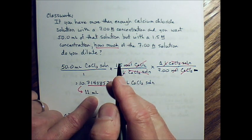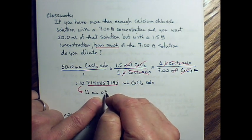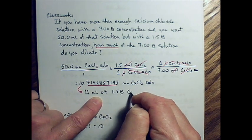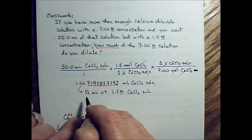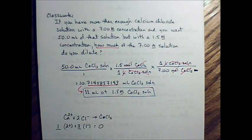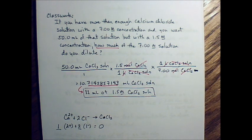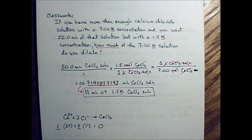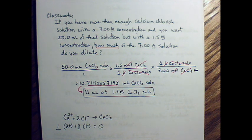This is 11 milliliters of the 1.5 molar calcium chloride solution. It's important that you say clearly what you're doing and what it is you're working with. So when you write the answer, you need to make sure you're saying what it is. Now that we've figured out how to find an answer, let's figure out how to use this answer.